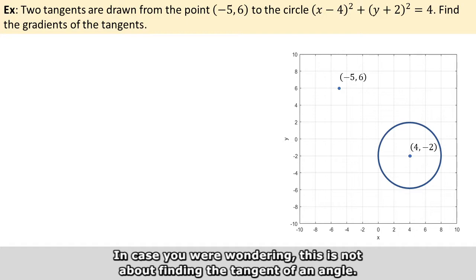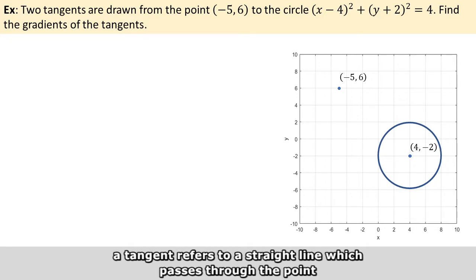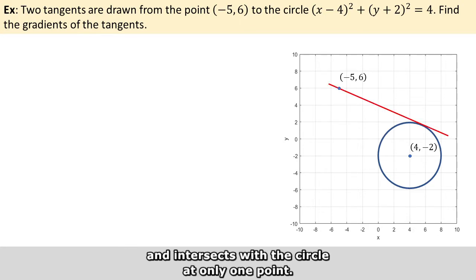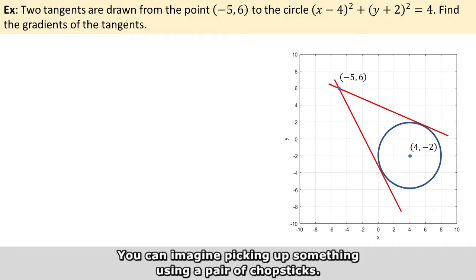In case we are wondering, this is not about finding the tangent of an angle. Rather, if there is a point outside a circle in a 2D space, a tangent refers to a straight line which passes through the point and intersects the circle at only one point. So naturally, there can only be two tangents. You can imagine picking up something using a pair of chopsticks.